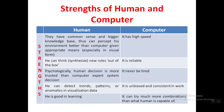Psychologically, a human's decision is more trusted than a computer expert system's decision. This is a psychological feeling, but decisions made by humans are still more accepted by other humans. Additionally, humans can detect trends, patterns, or anomalies in visualization data — anomalies meaning differences from standard values. Visualization is the most important and impressive feature of human beings compared to computers, and humans are also very good at learning.